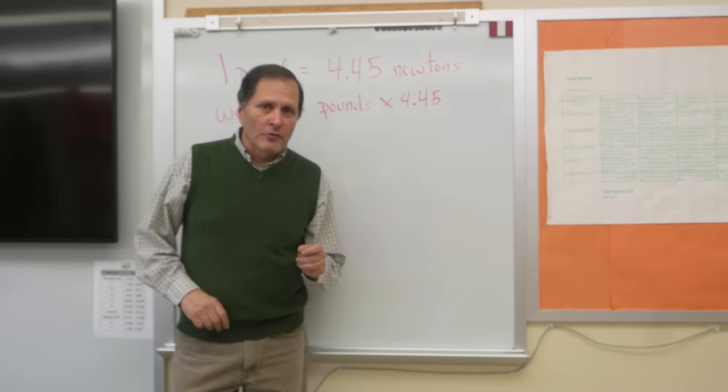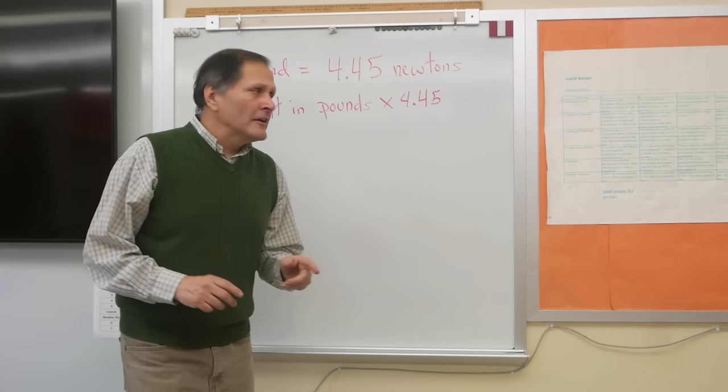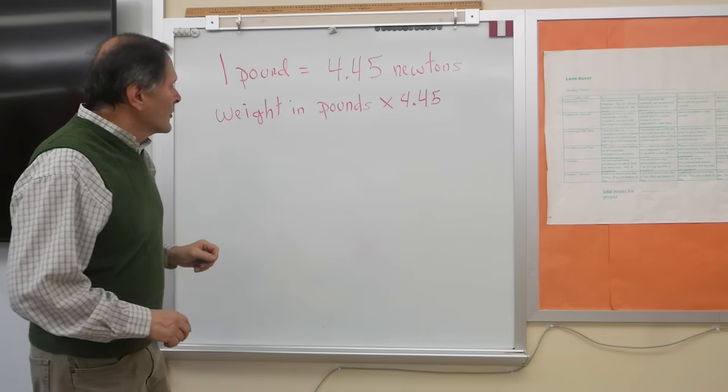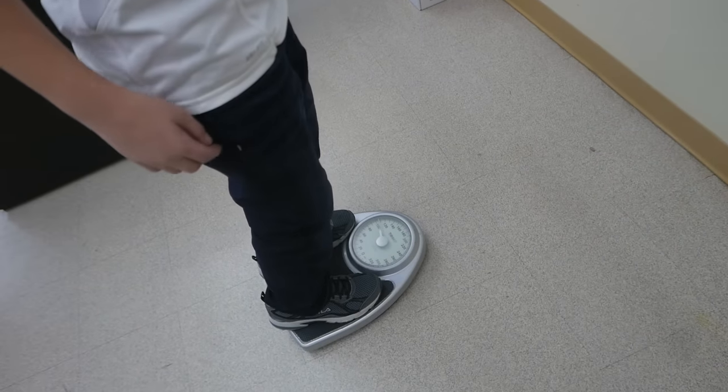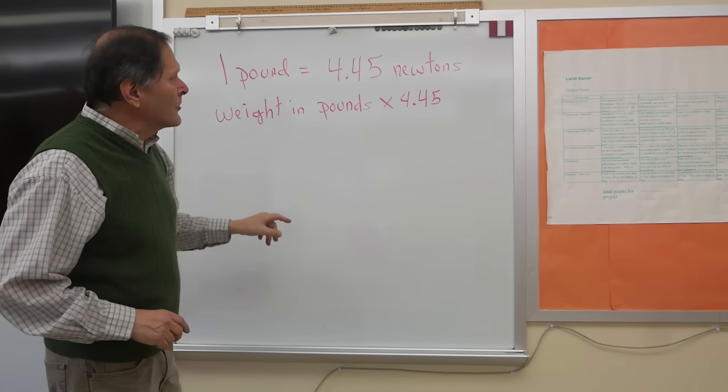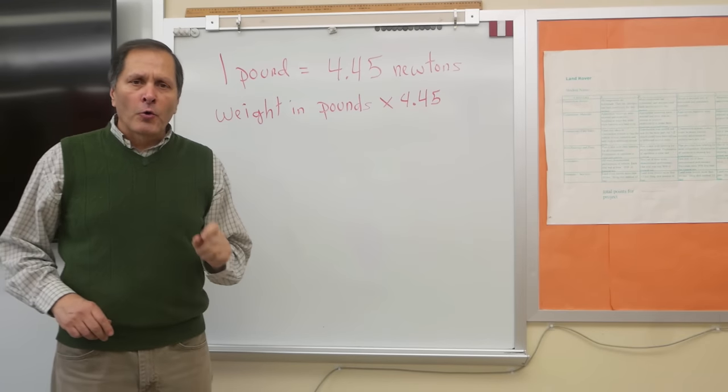Now, the force that the students are going to use in their calculations is their body weight in newtons. To find it, we know that 1 pound is equal to 4.45 newtons, so I'm going to have my students weigh themselves. And then I'm going to have them take their weight in pounds and multiply it by 4.45, and that will be the force that we use.